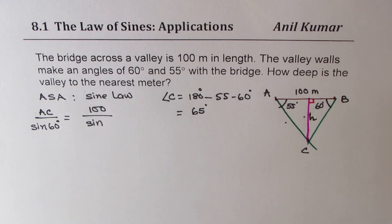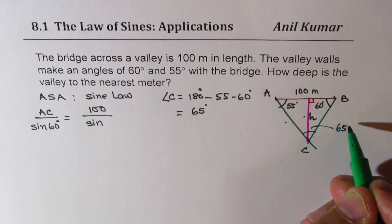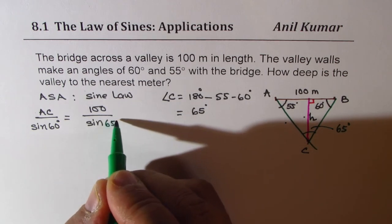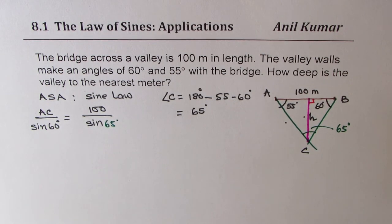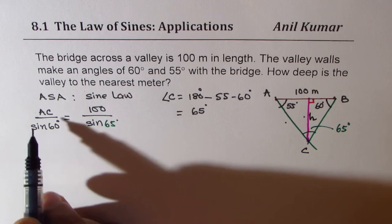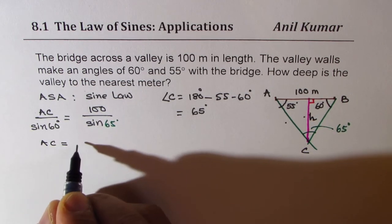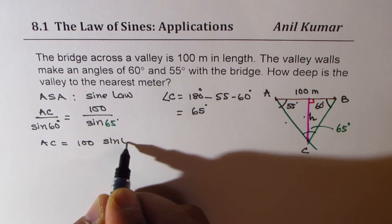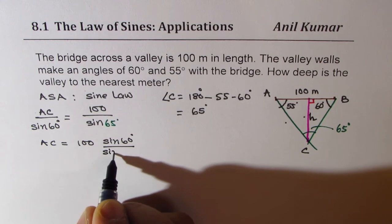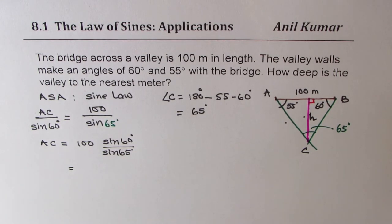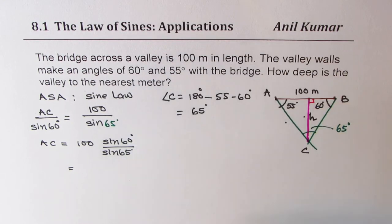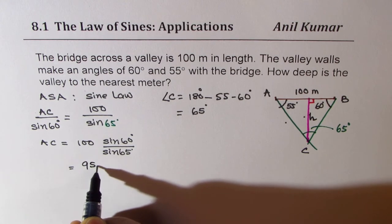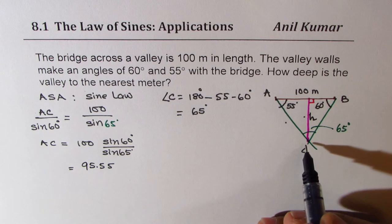So that is 180 minus 55 minus 60 equals 65. So we just found that this angle here is 65 degrees. So this combination is critical to use sine law. Now you have to just cross multiply and get the side length AC. So AC equals 100 times sine of 60 degrees divided by sine of 65 degrees. That equals 95.55.